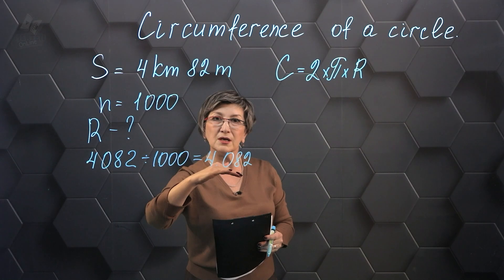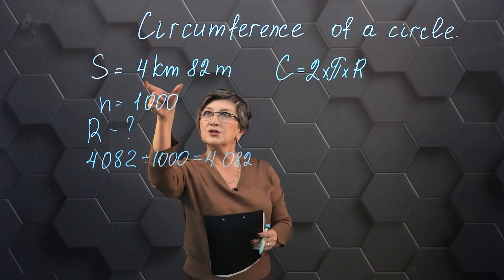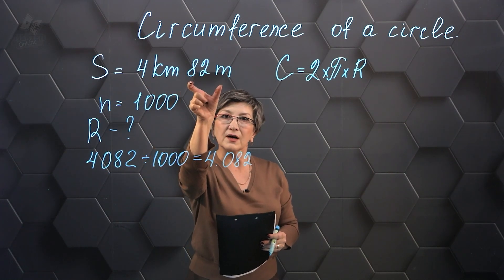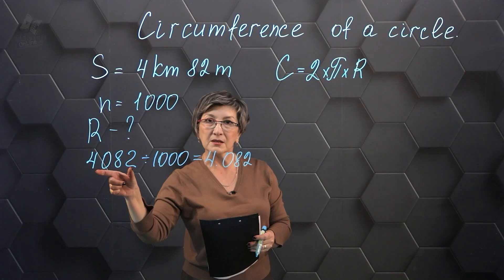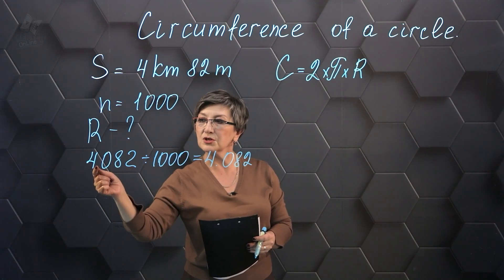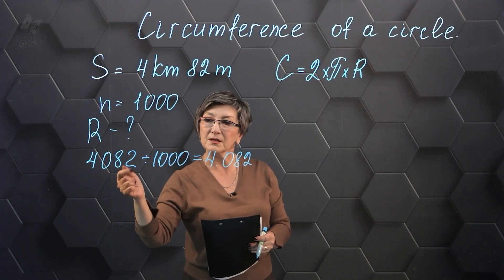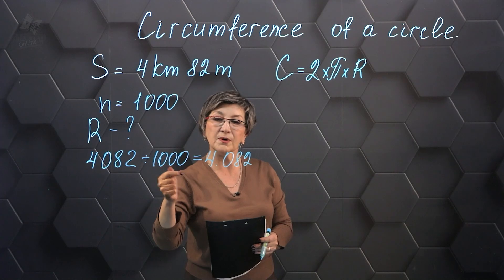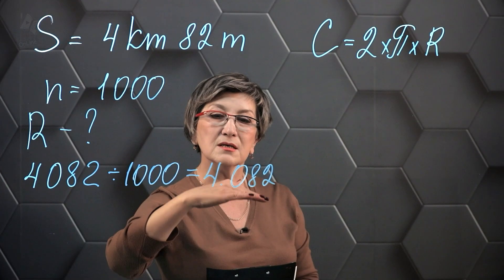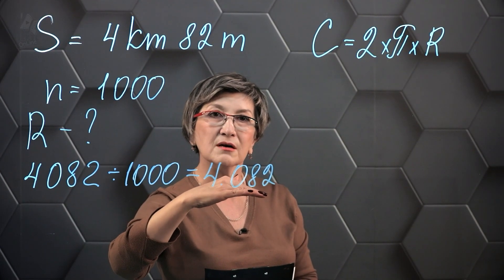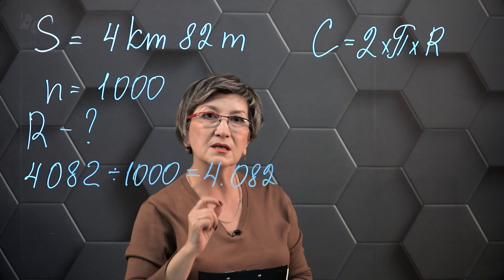How did we get this answer? We converted 4 kilometers and 82 meters into meters. The result is 4082 meters divided by 1000 revolutions. The result is that the length of the circle is 4.082 meters.